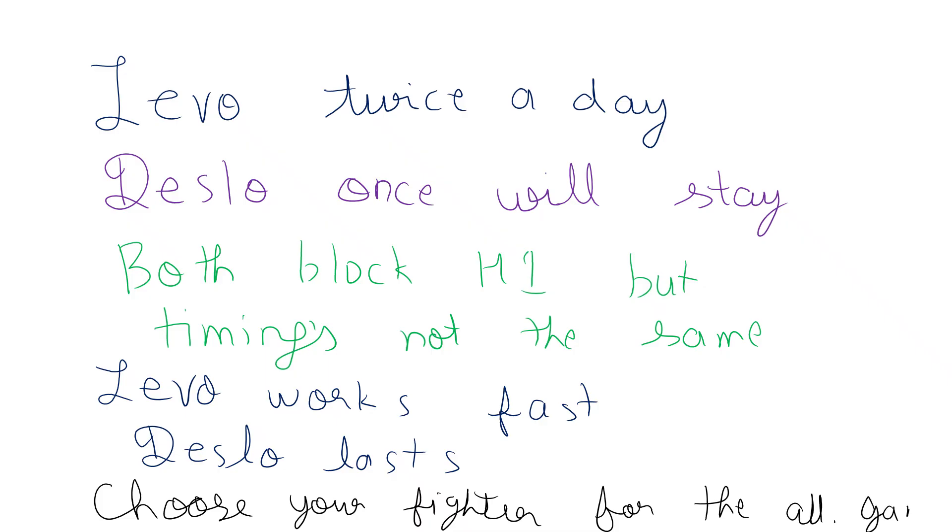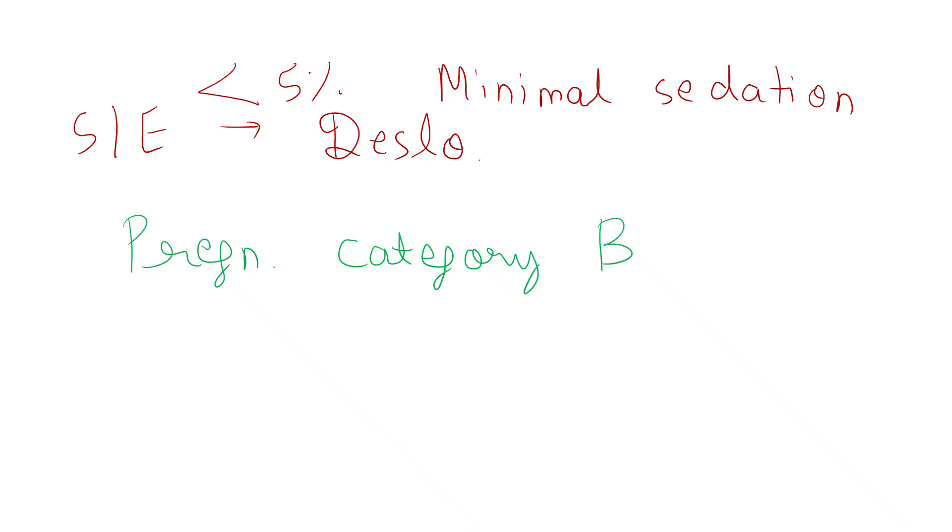Now talking about side effects and safety. Both cause minimal sedation, less than 5% compared to placebo. Levocetirazine has slightly more reported fatigue, while desloratidine has better overall tolerability. So the battle in the side effect profile is won by deslo. Drug interactions are minimal for both. Both are pregnancy category B, that is safe for use during pregnancy.